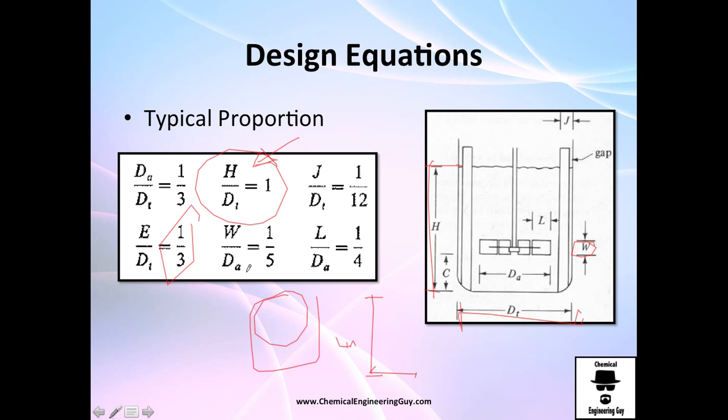W, or the height of the diameter, versus the diameter of the impeller. J is the size of the baffle versus the total diameter, must be ratio 1 to 12. And the L is here, and diameter of the impeller is here, so the ratio must be 1 to 4.